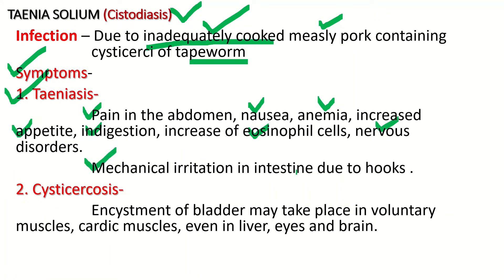There is also mechanical irritation in the intestine due to the hooks of the adult tapeworm. The hooks and suckers may cause mechanical irritation in the intestine. The second disease caused is called Cysticercosis, which is the effect of the cysticercus. Due to the infection of cysticercus, Cysticercosis disease takes place in human beings.